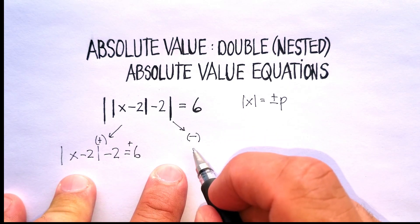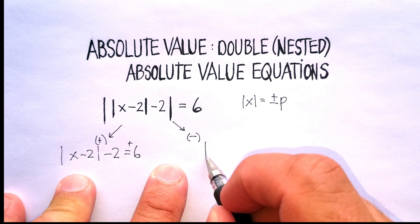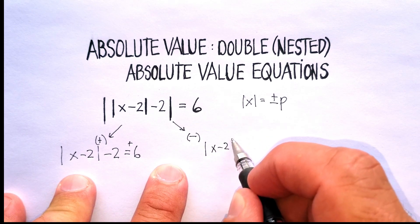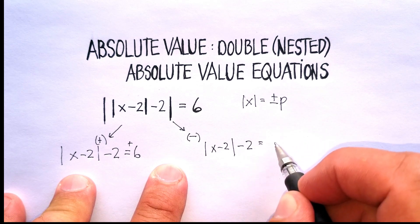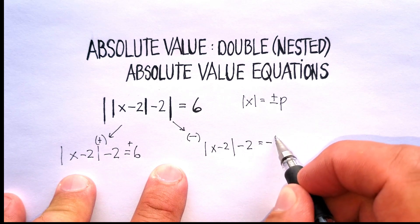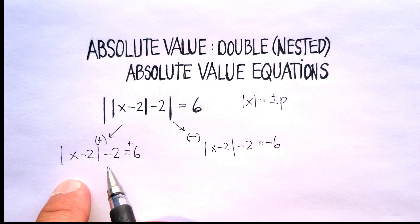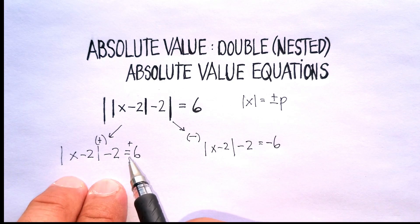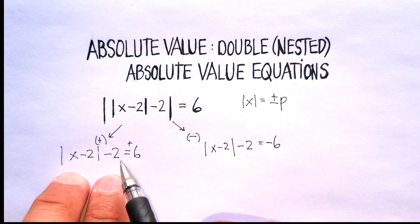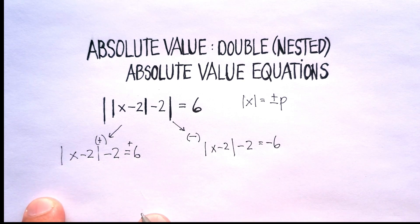The absolute value of x minus 2, minus 2, is equal to positive 6. Let's do the same thing for the negative case — the absolute value of x minus 2, minus 2, is equal to negative 6. Now we're going to do the second stage. We still have an absolute value here, so we're going to break this up into two cases again. But before we do that, we need to isolate the absolute value.